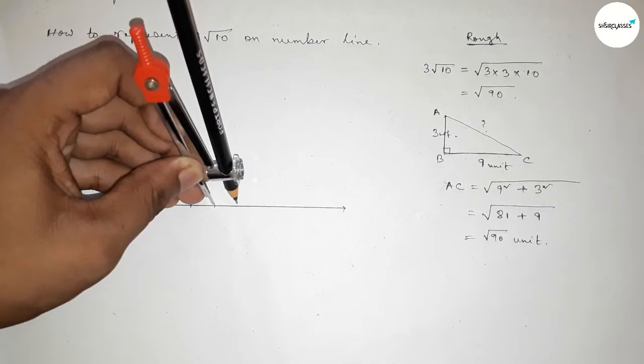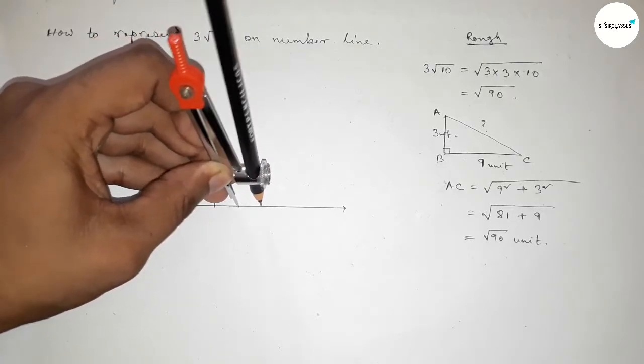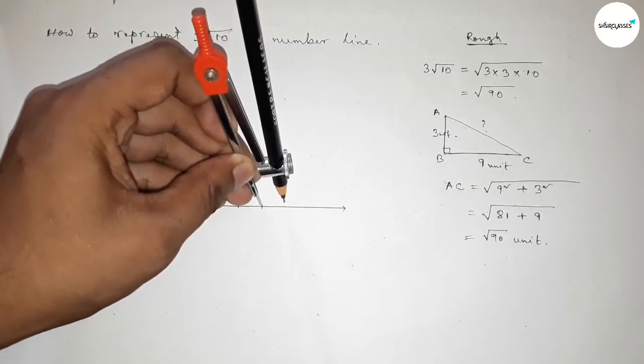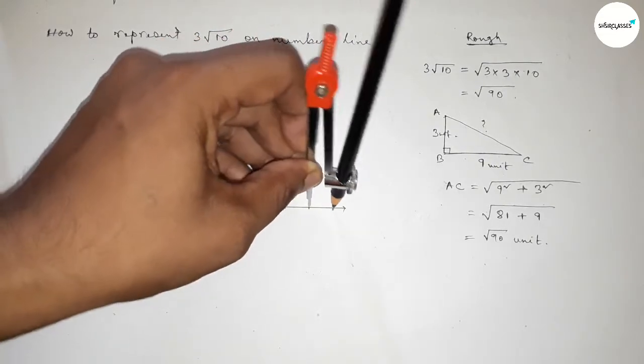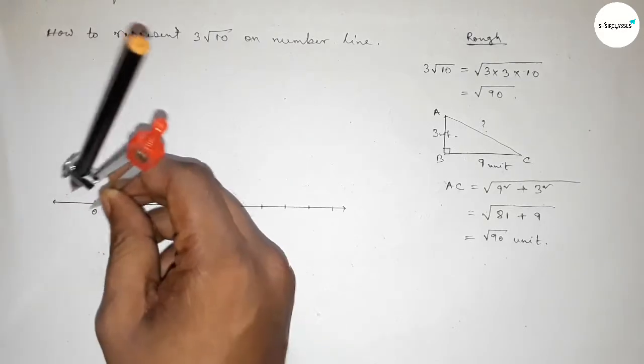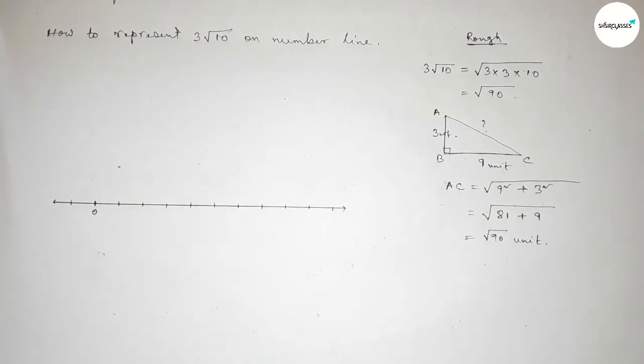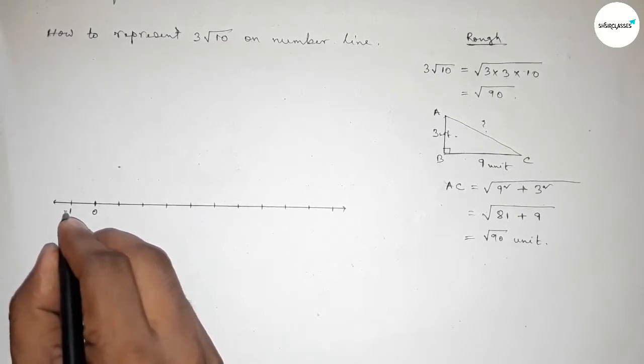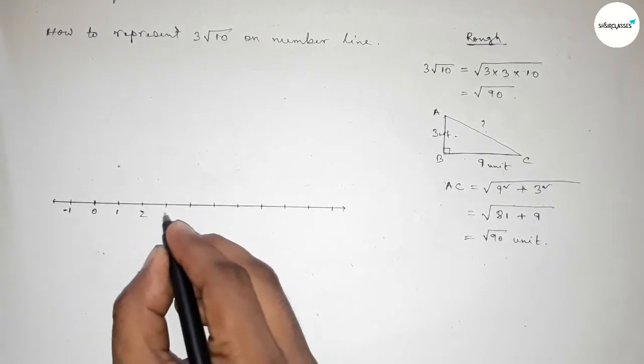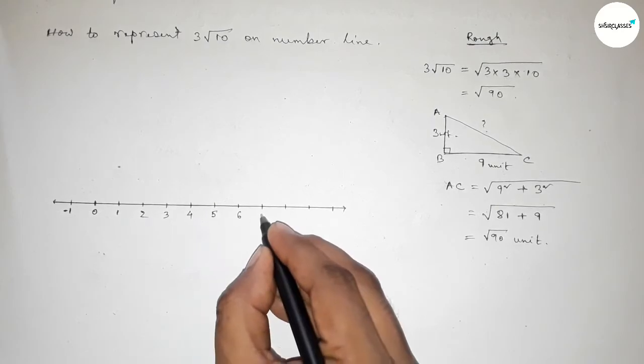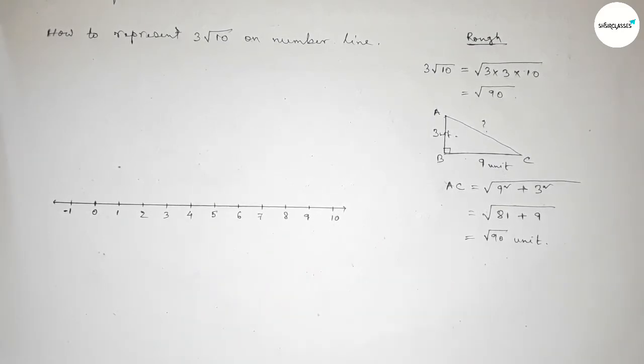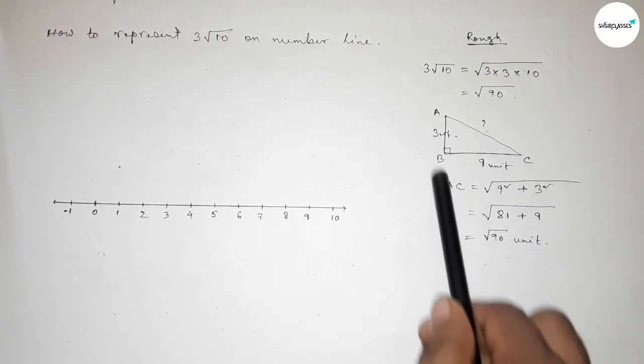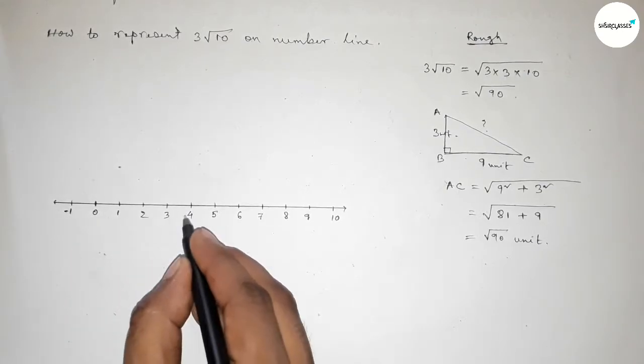And the length of the compass is 1 unit length. So first we have to mark the numbers on the line by this way. And marking this side, so this side minus 1, and here 1, 2, 3, 4, 5, 6, 7, 8, 9, 10.